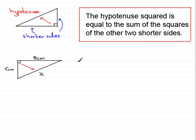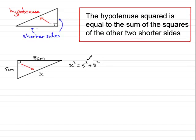According to Pythagoras' theorem, the hypotenuse squared — that's x squared — is equal to the sum of the squares of the other two shorter sides. So I can write 5 squared plus 8 squared. It wouldn't matter if I wrote 8 squared plus 5 squared; it would give exactly the same result.